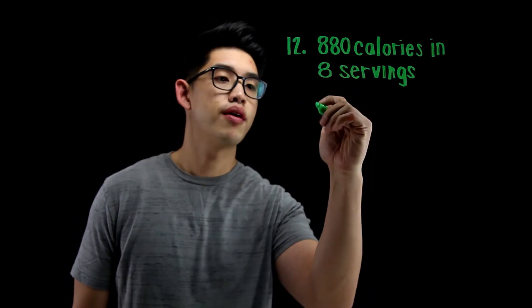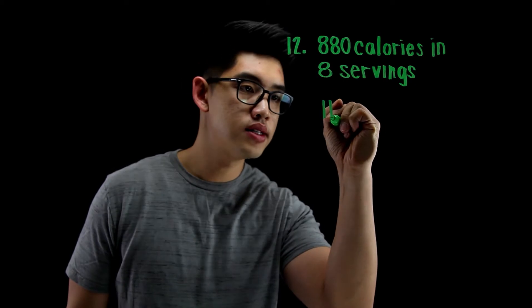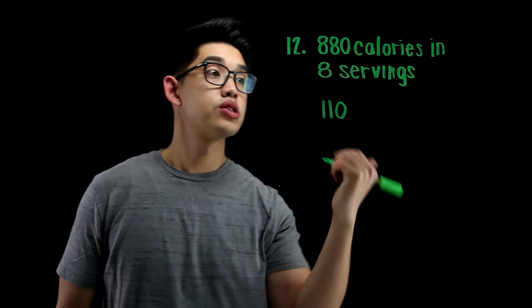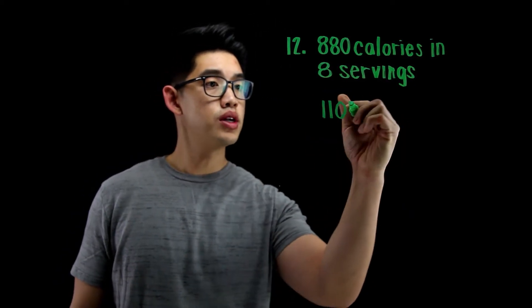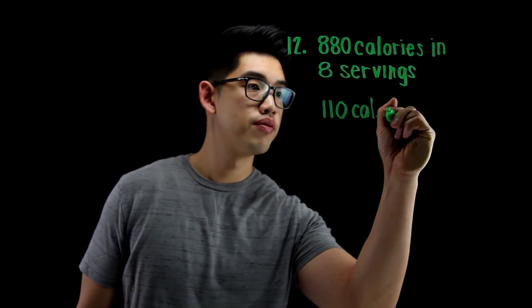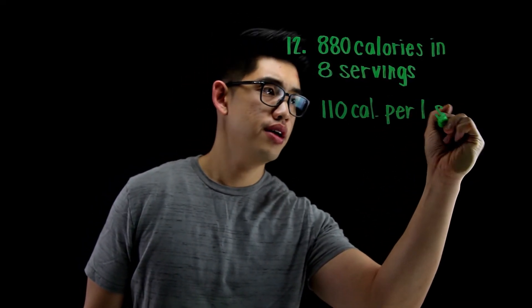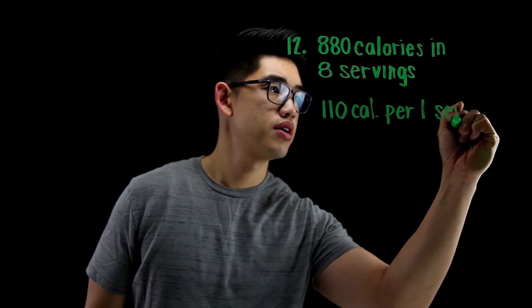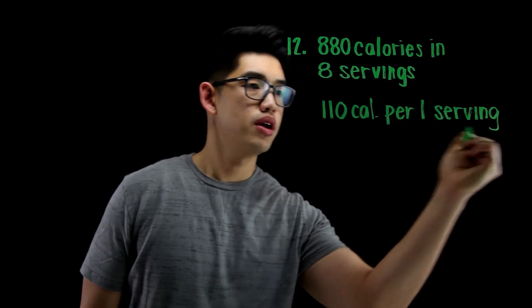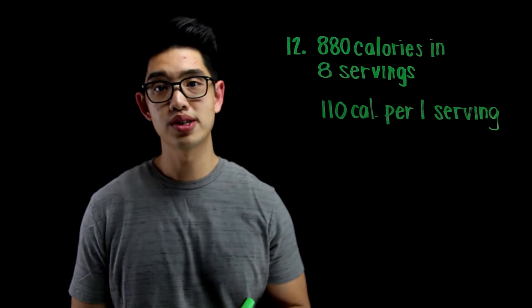8 goes into 8, 1 time. 8 goes into 8, 1 time. 8 goes into 0, 0 times. So I know it's 110 calories per 1 serving. Or we can just say per serving — you don't need that 1, but I'm going to put the 1. So 110 calories per 1 serving. We're done.